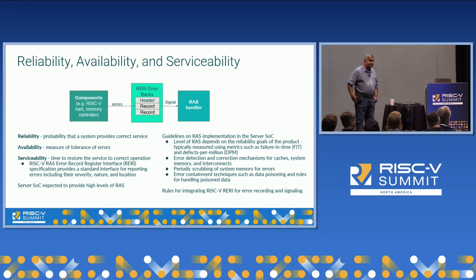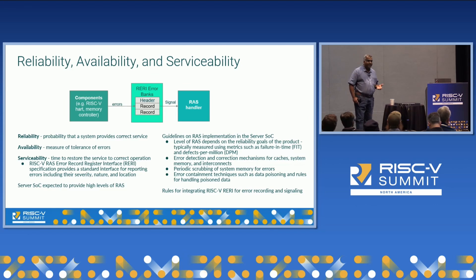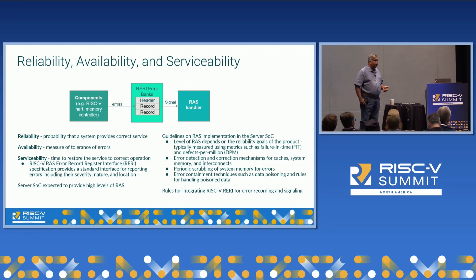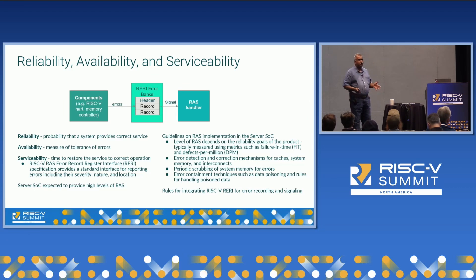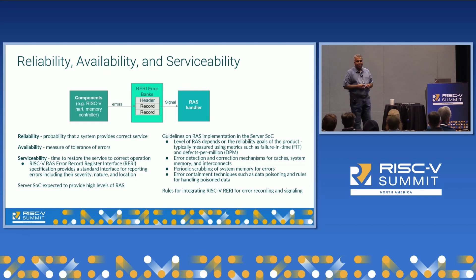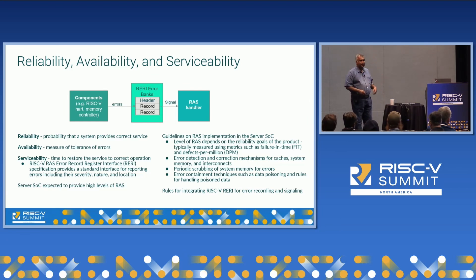The specification provides guidelines around error detection and correction mechanisms being implemented for caches, memories, and interconnects. It calls out a need for periodic scrubbing of memories — with large memories accumulating bit errors, you do not want software to stumble into an error and crash. It also specifies error containment mechanisms, because you do not want errors to escape and persist over the network or into storage. Techniques such as data poisoning and enhanced DPC are utilized so that if an error occurs, it gets contained to the system, avoiding persistent data corruption.